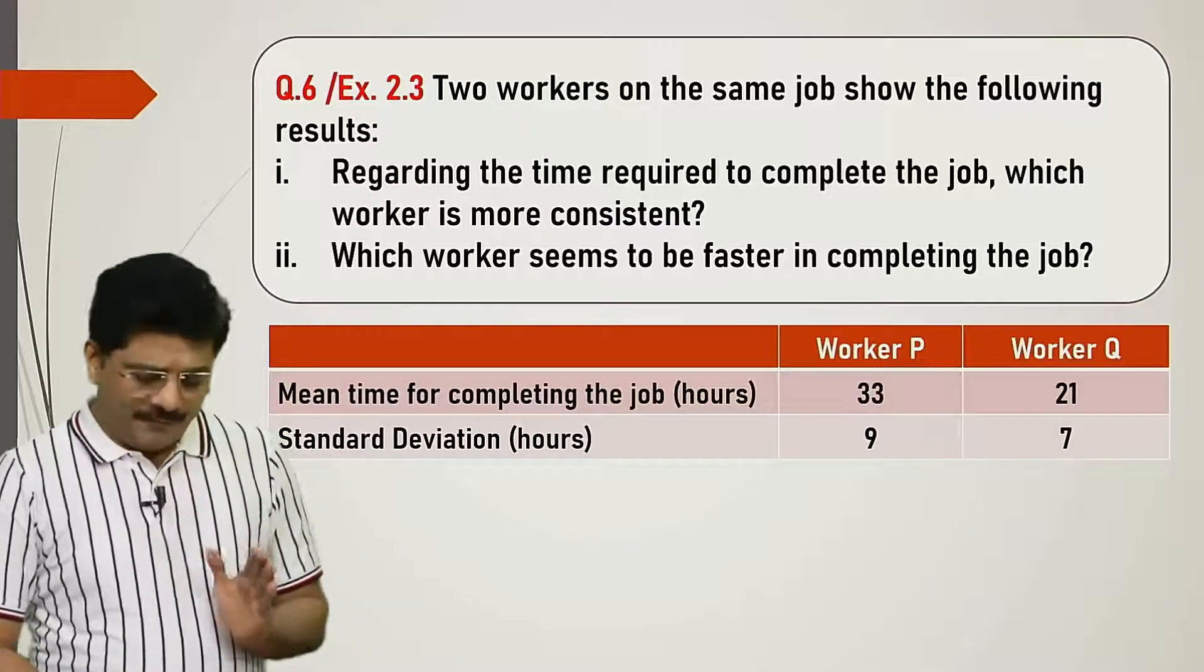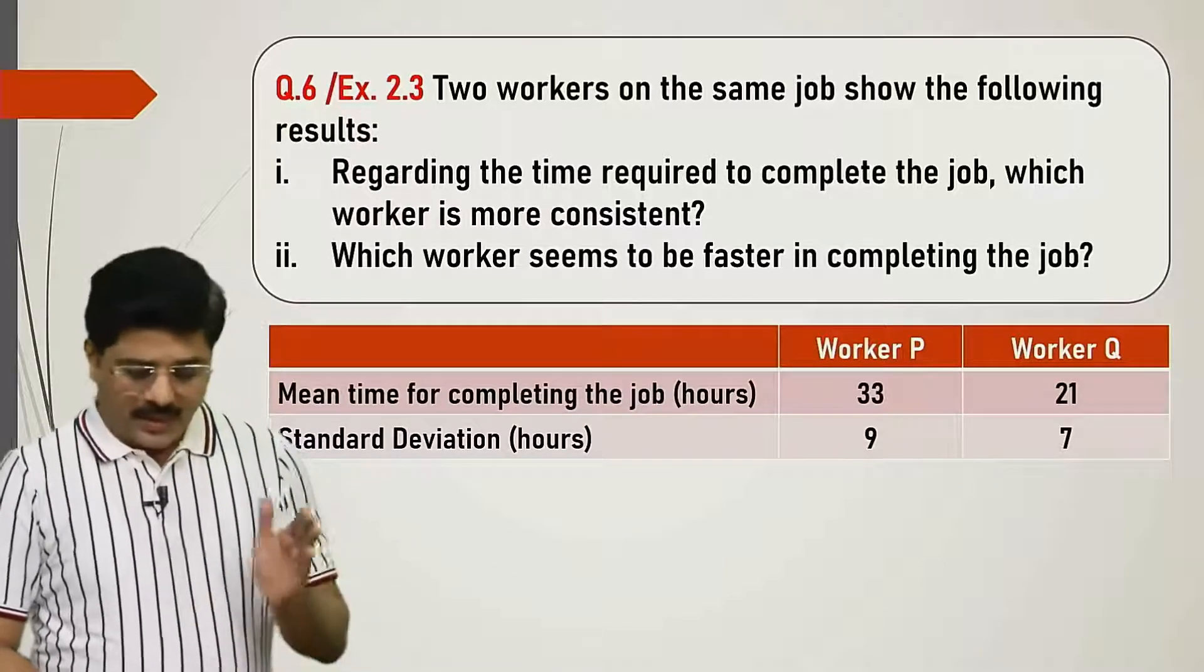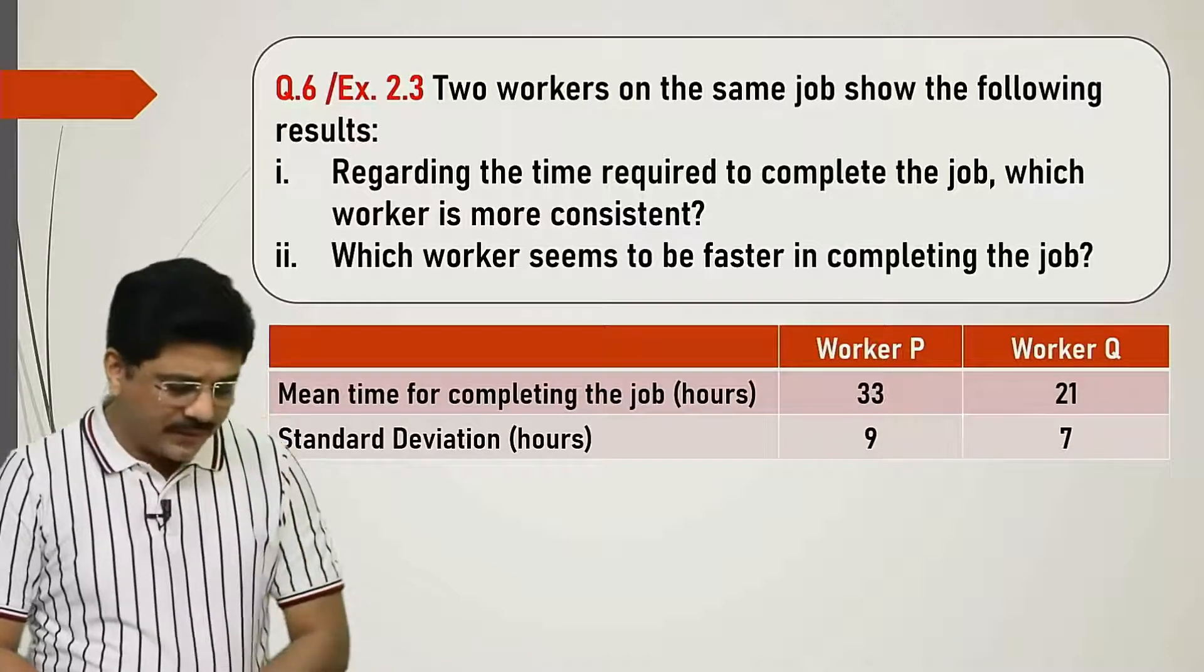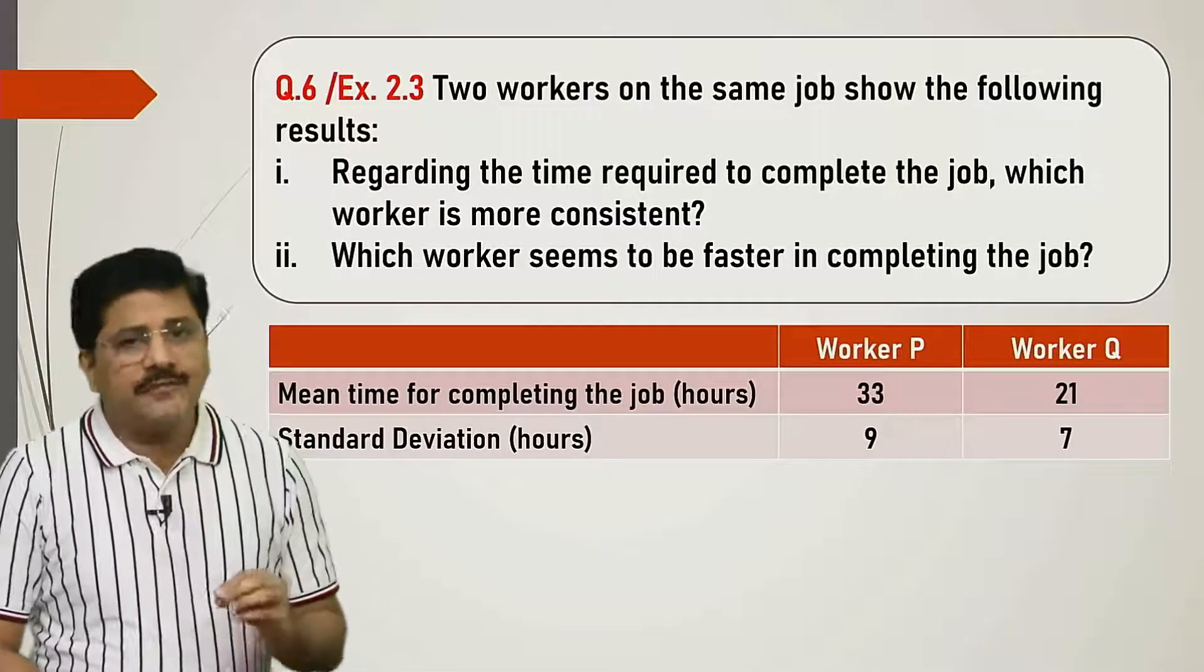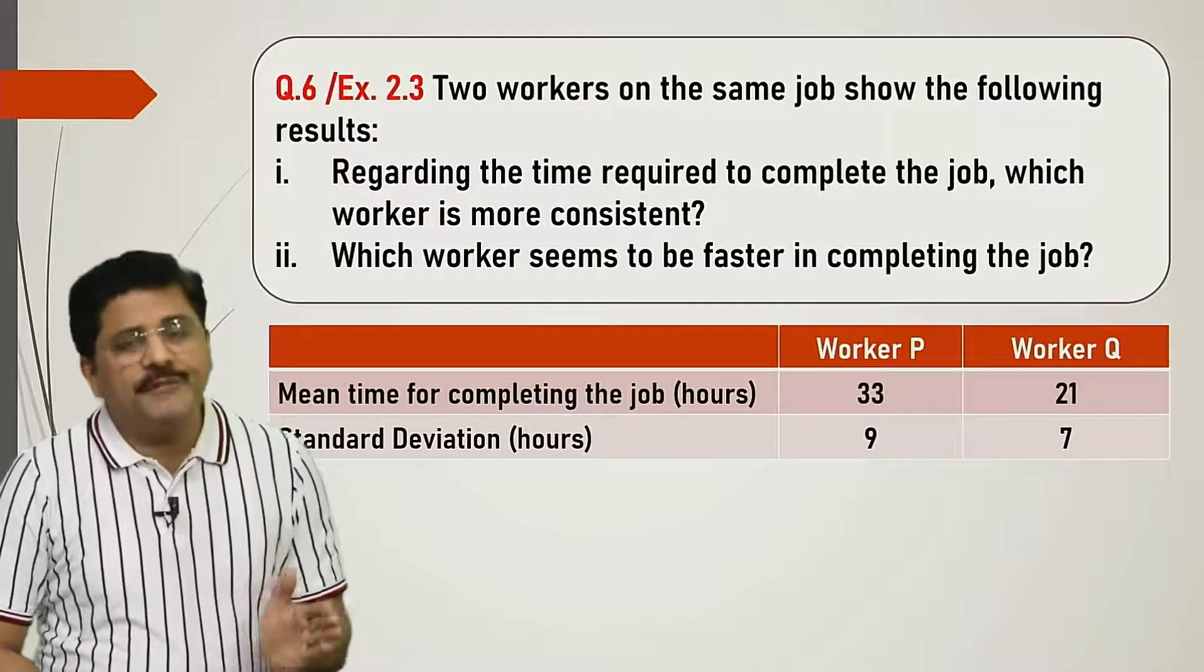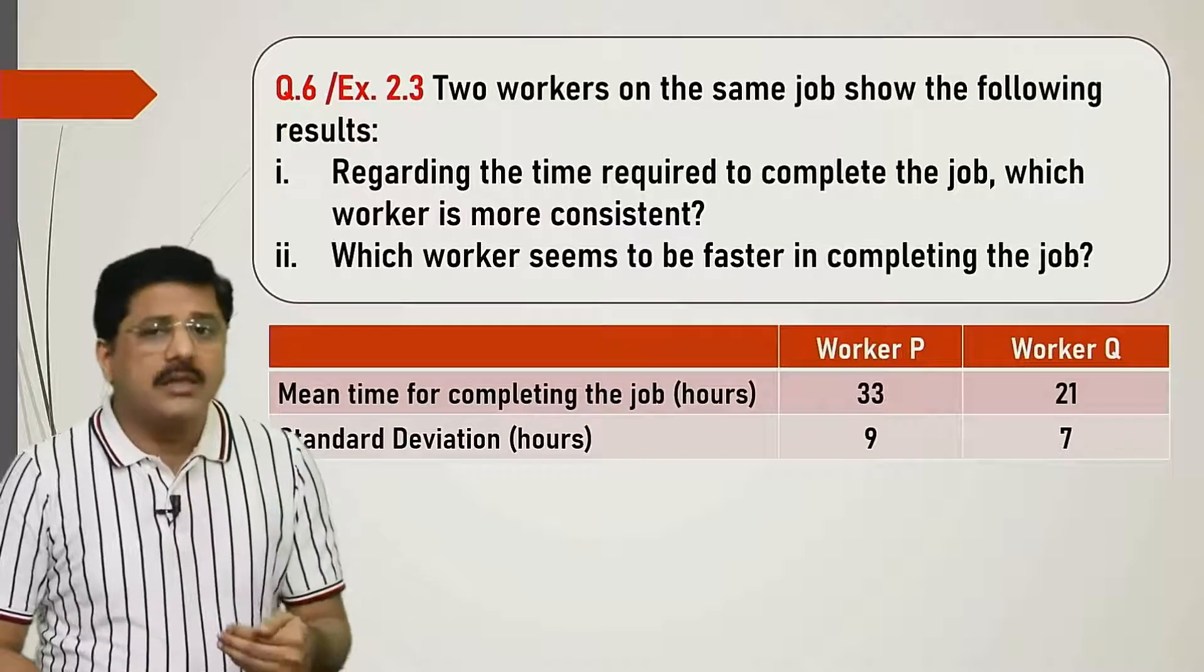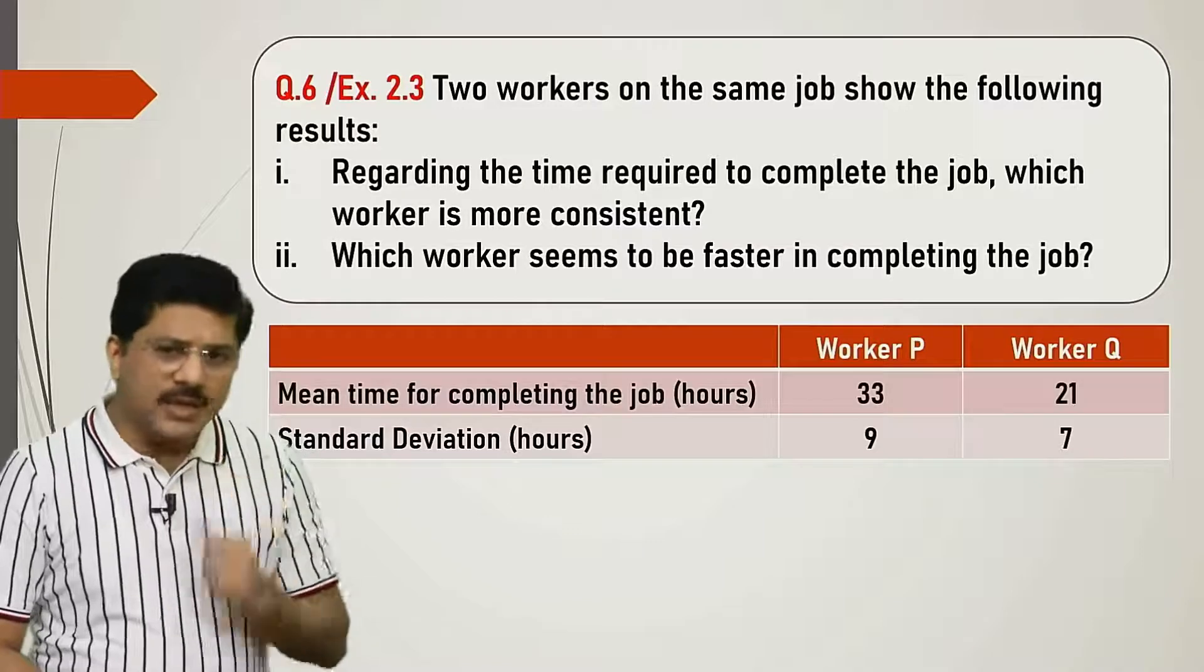Second question: which worker seems to be faster in completing the job? I'm dictating, you write. Mean time of completing the job is 33 hours for P and 21 hours for Q. Therefore, worker Q is faster in completing the job. That's the second answer. Now first answer about consistency.